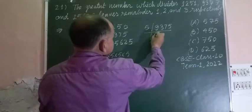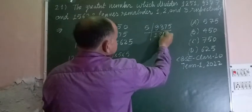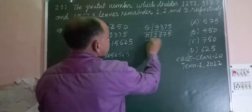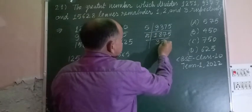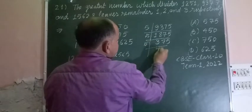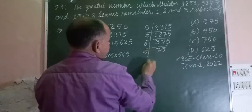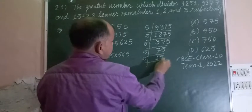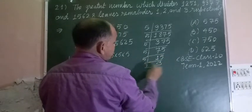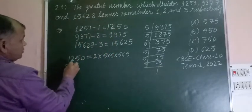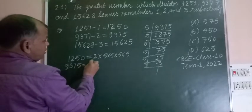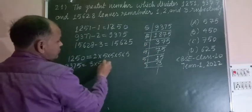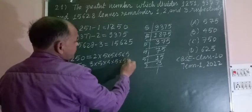Now we find the factors of 9375. We divide by 5 to get 1875, by 5 to get 375, by 5 to get 75, by 5 to get 15, and by 5 to get 3. So 9375 equals 3 times 5 to the power of 4, which is 5 multiplied five times.